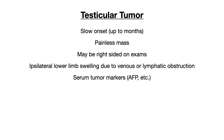Usually on exams, it's going to be right-sided — tying back to that high yield anatomy point about the 90-degree angle on the left side, which is why you usually don't see a tumor on the right side normally. If the exam writer wants to signal a tumor, they're going to make it obvious by making it right-sided. You could also see lower limb swelling ipsilaterally, due to the testicular tumor causing local compression or obstruction of venous and lymphatic outflow.